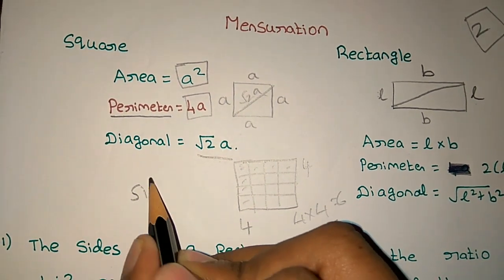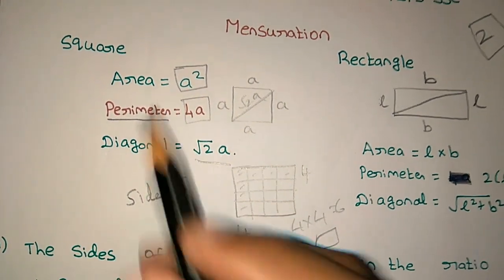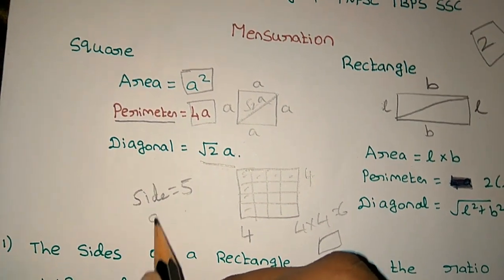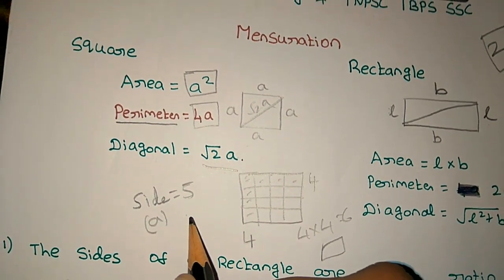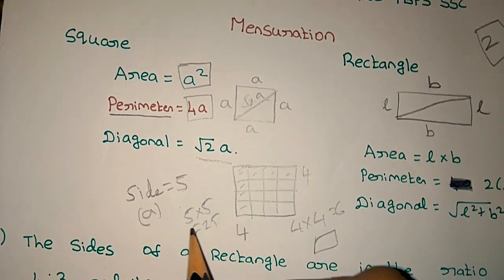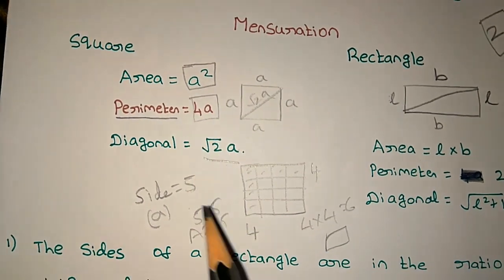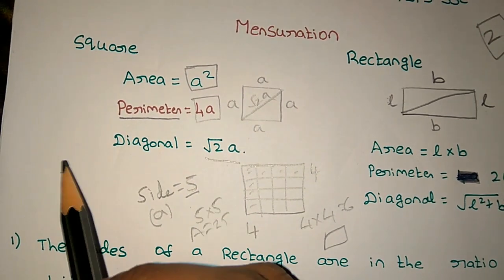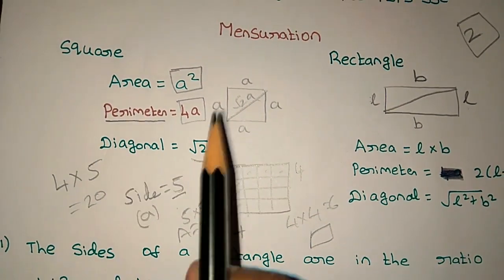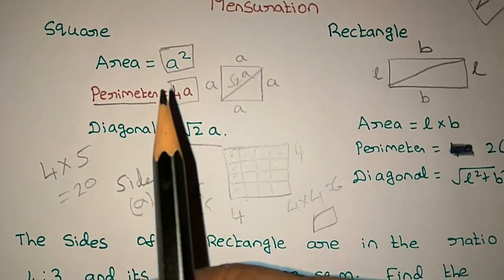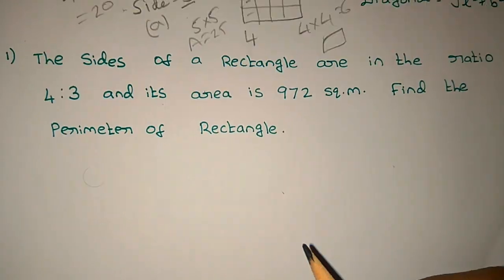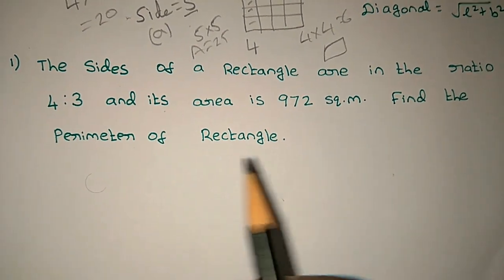For a square example: if side a = 5, then area = 5 × 5 = 25. This is the area. For the perimeter: 4a = 4 × 5 = 20.